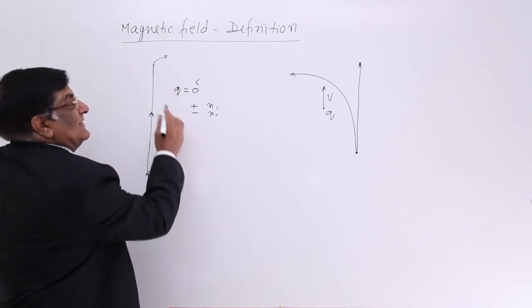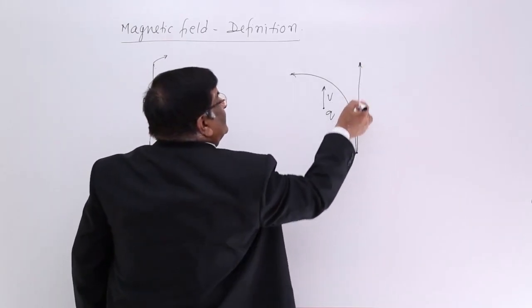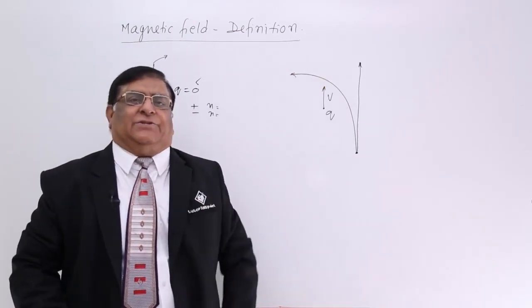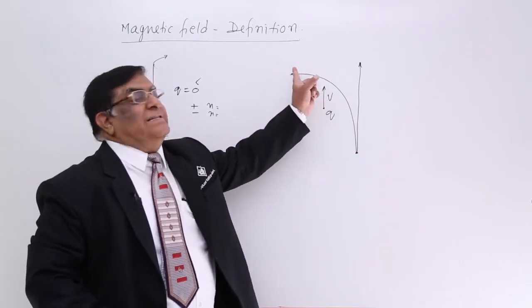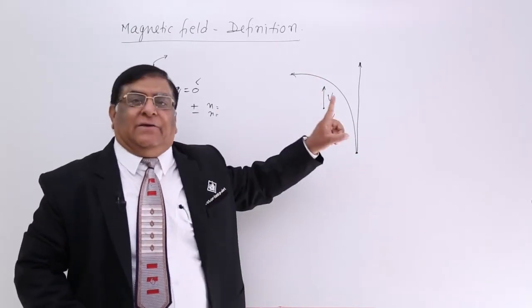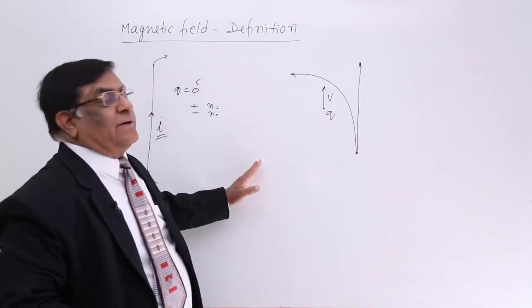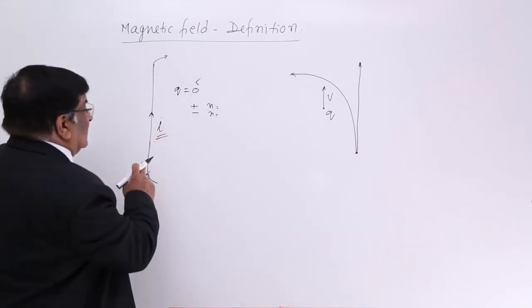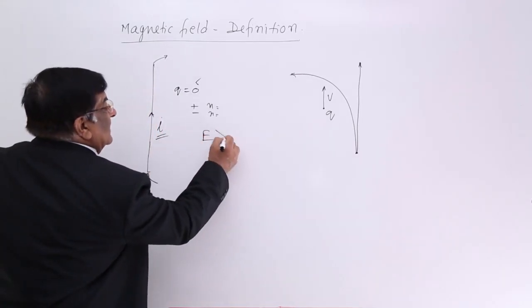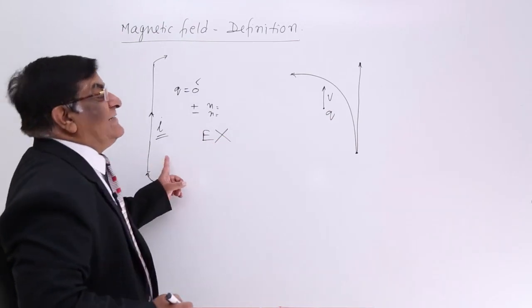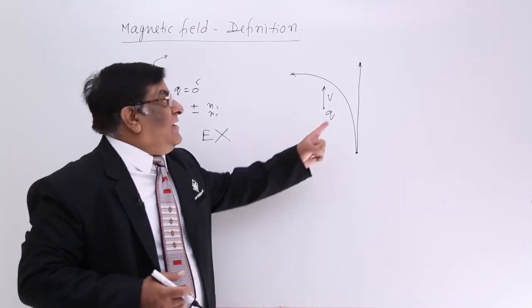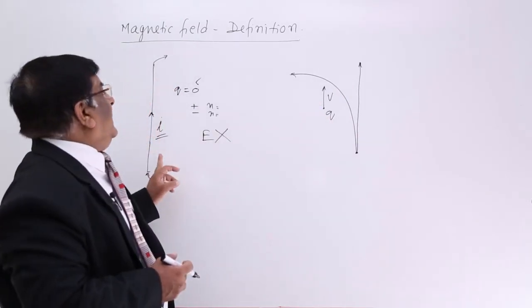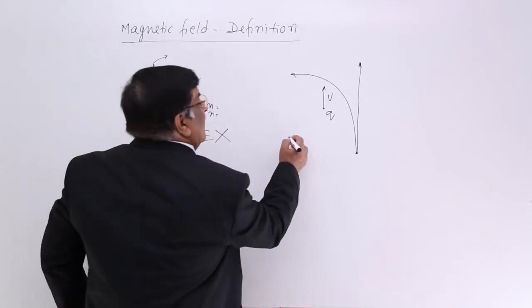Now when I start current in this conductor, the charge particle which was moving straight bends — in this direction, that direction — we will see the direction rules later, but it changes its direction. Changing direction means a force is applied without contact. Any field applies force. But this conductor is incapable of creating an electric field. Then what field is it creating? We say a force is applied on the moving charge, and the field created by this current is called magnetic field.